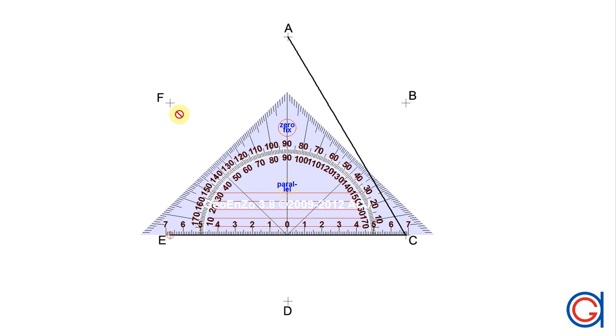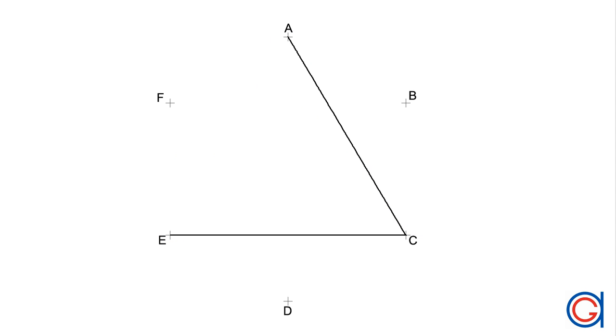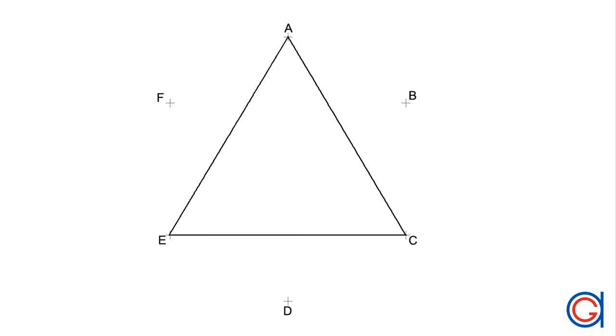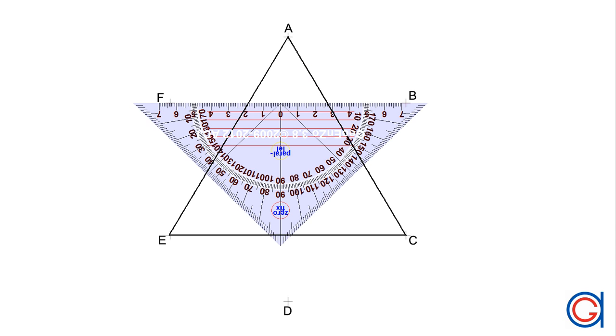From C to E, skipping vertex D, and from E back to A, skipping vertex F. As you can see here, now we need to lift our pencil because we haven't gone through all the points.